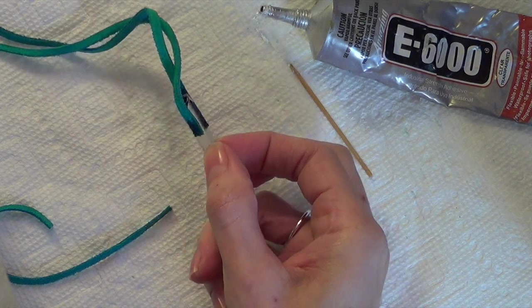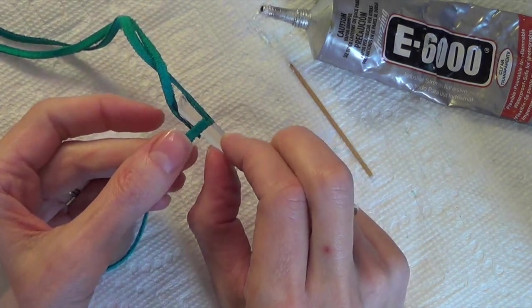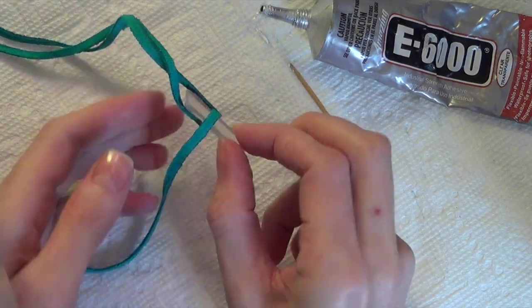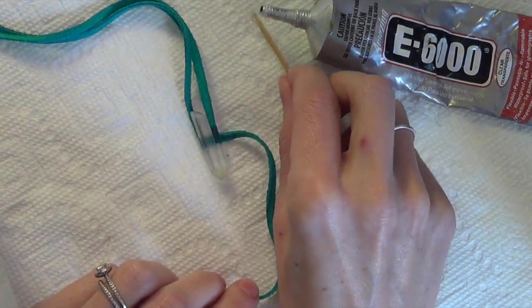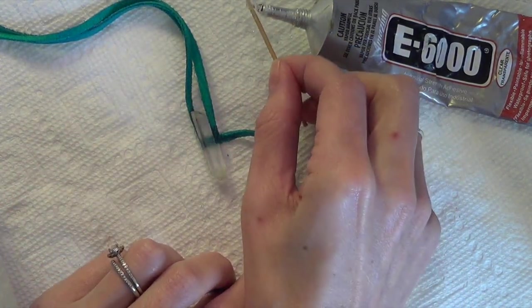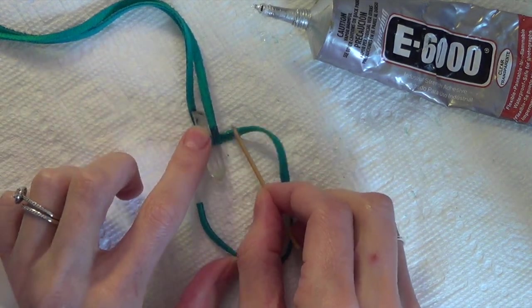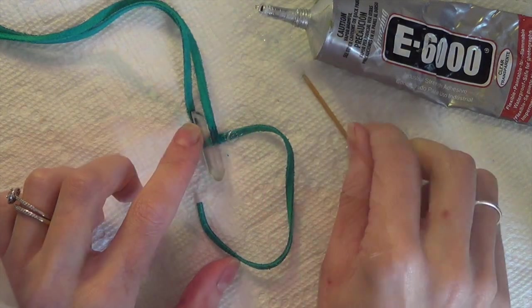Again, putting a little bit of glue on the end of that piece of leather, and we're going to wrap this around. We're going to secure those ends in place and give it a prettier finish. I'm just deciding which I want to be the back of my necklace because the ends of the leather are going to show on the back.